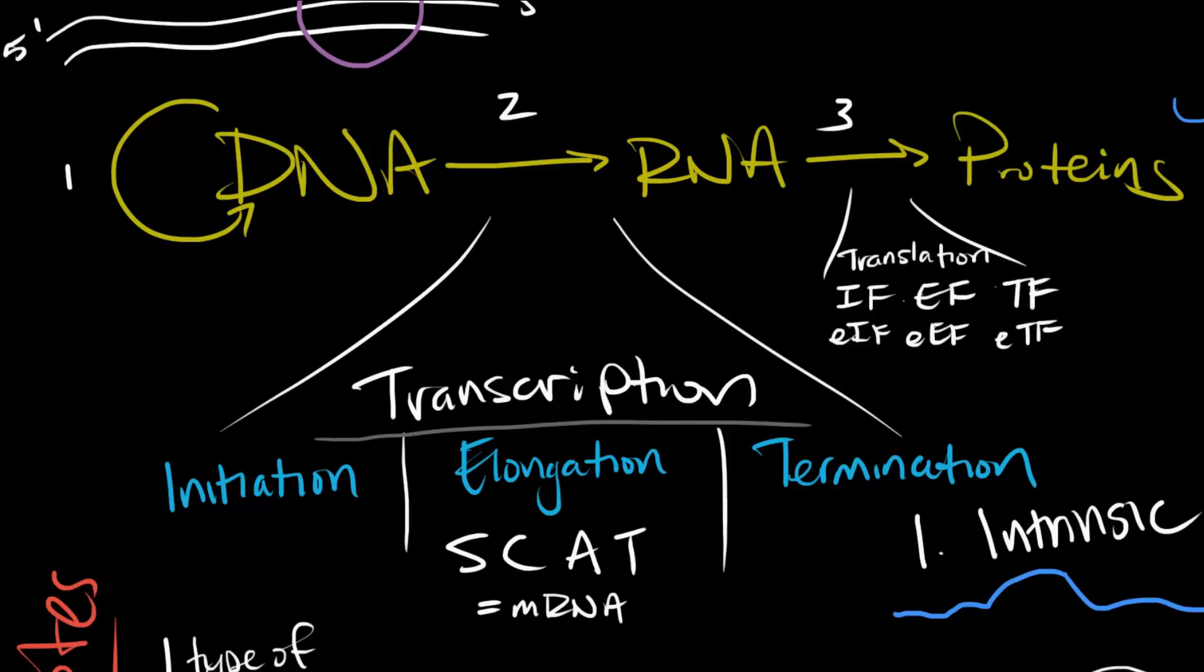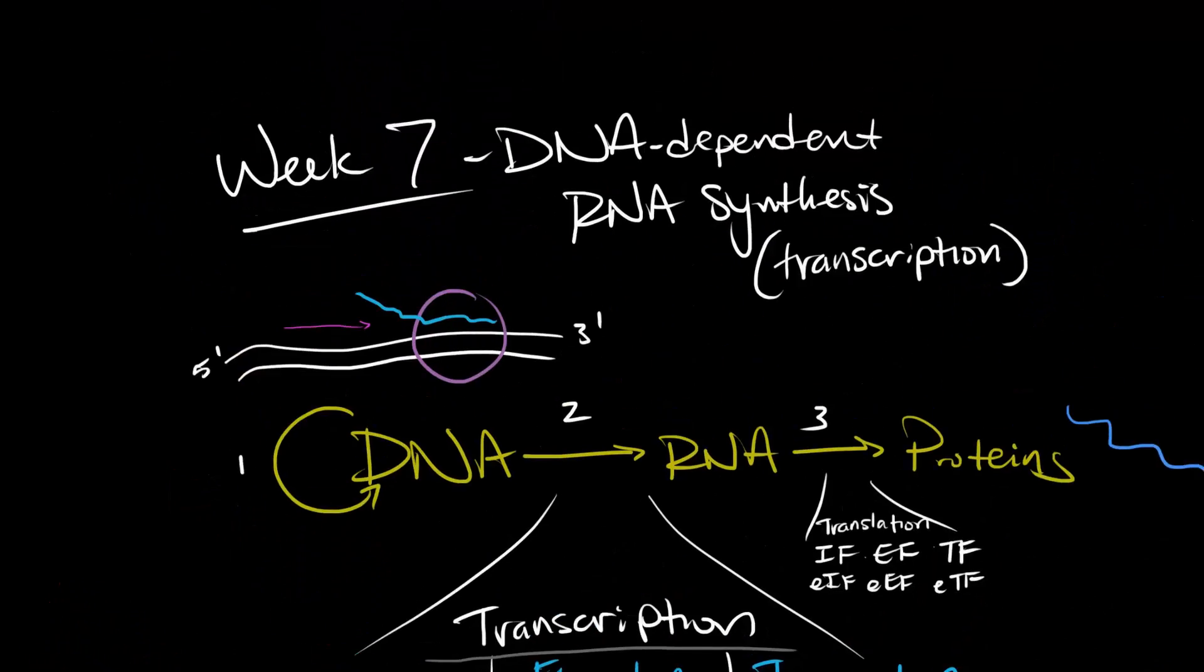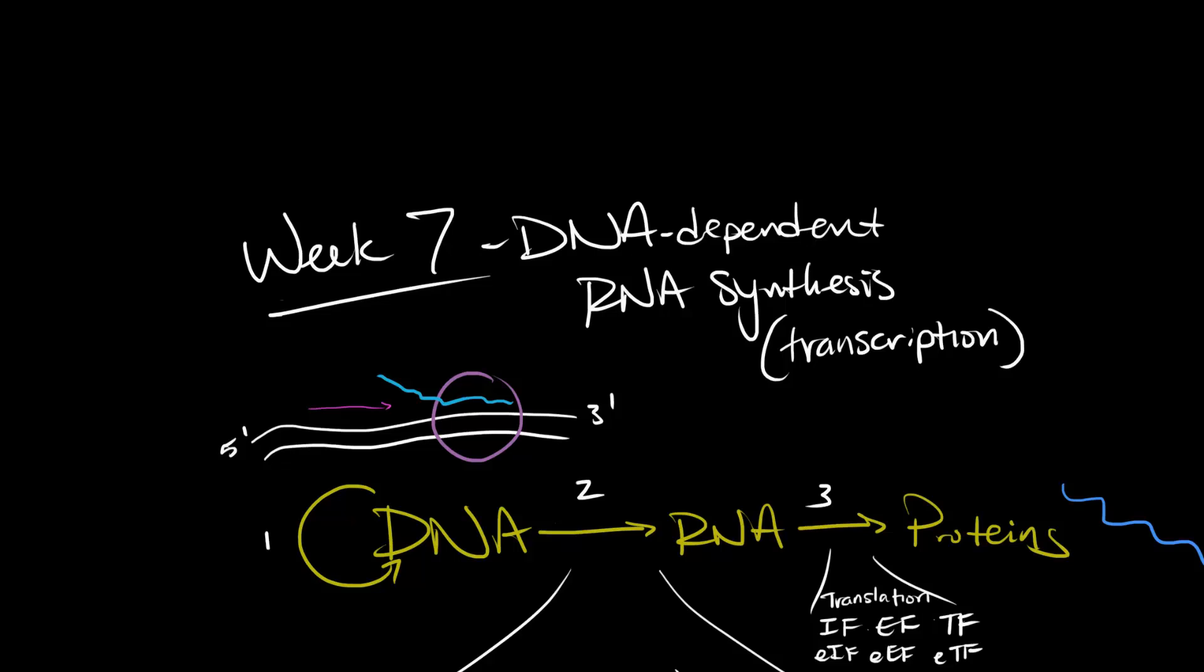Like I said, transcription is the process of reading DNA to make RNA. Just like with DNA, RNA nucleotides are put down in the 5' to 3' direction. Now, for the most part, DNA replication is the same for eukaryotes and prokaryotes. When we're talking about transcription, though, there are significant differences that you need to know.